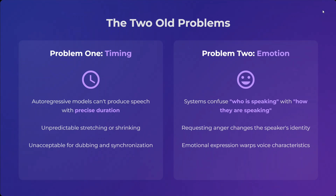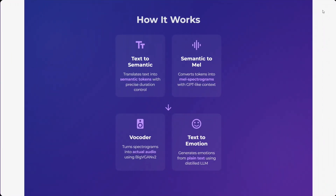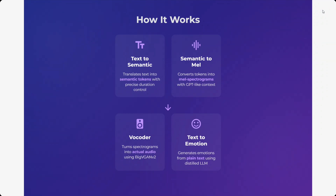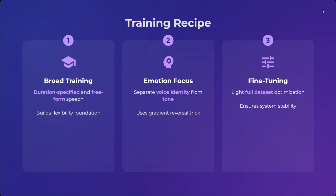Index TTS 2 solves both issues. Here's how it works: Text-to-Semantic translates text into semantic tokens with precise duration control. Semantic-to-Mel generates spectrograms with GPT-like context. A vocoder then turns spectrograms into actual audio using BigVGAN v2. Finally, Text-to-Emotion generates emotions from plain text using a distilled LLM. We're not jumping into the full details here, but this is the overall architecture.